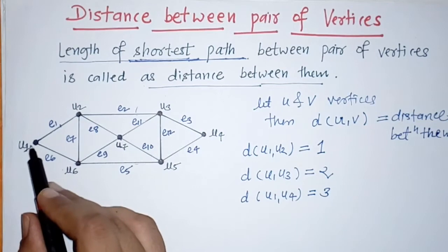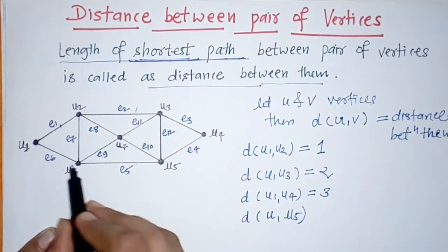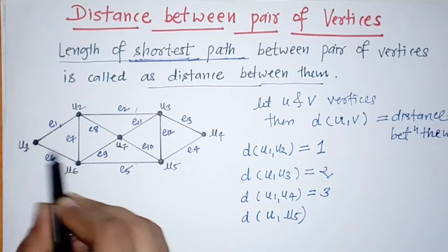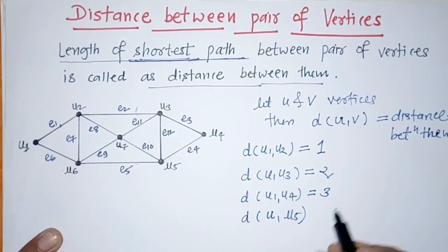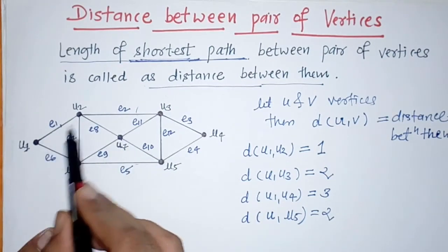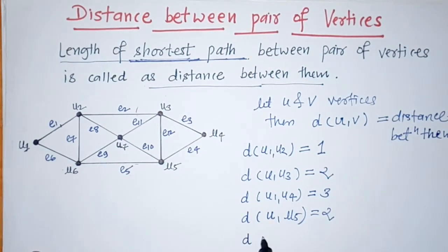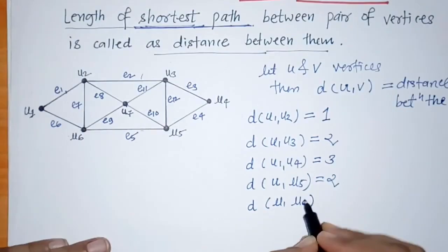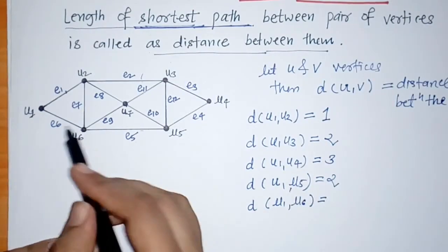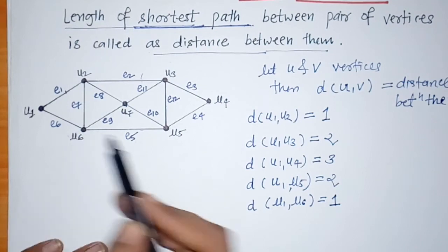For distance between u1 and u5, we can travel by various ways, but the shortest path gives a distance of 2. Next, the distance between vertex u1 and u6 is 1, including only one edge.